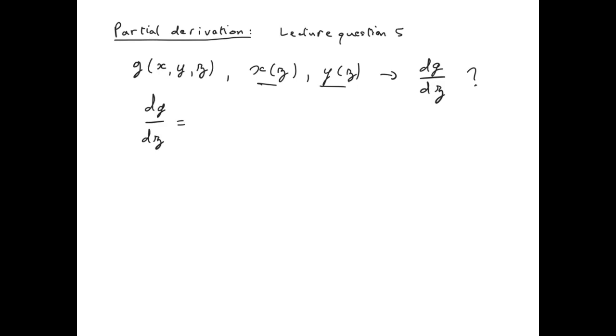So first, just consider the part of g which is just a function of z. So that's, if we don't take into account for the moment the fact that x and y are functions of z, that's just the partial derivative of g according to z. So we have this term.